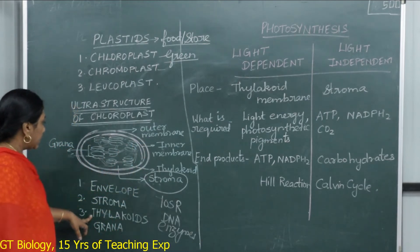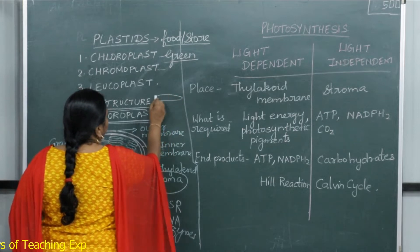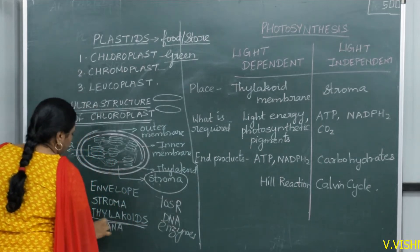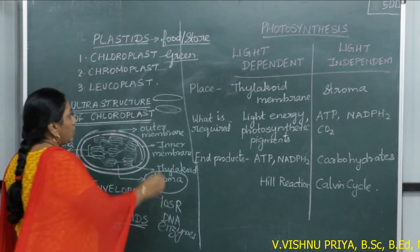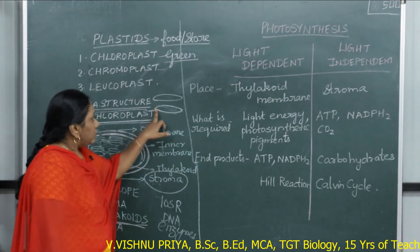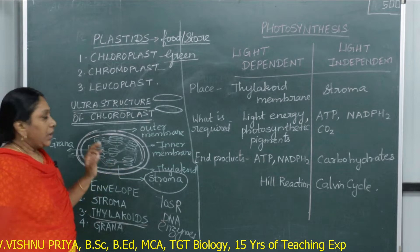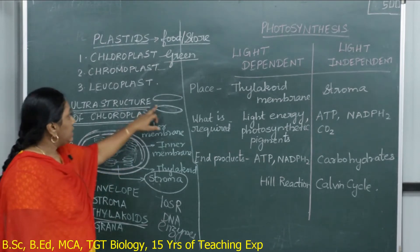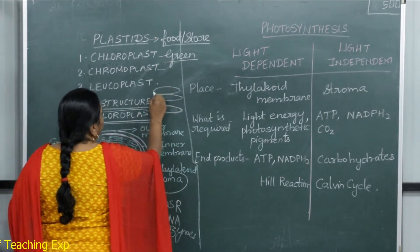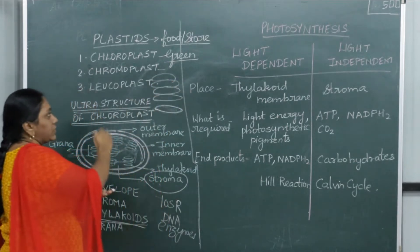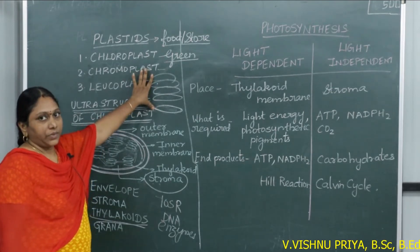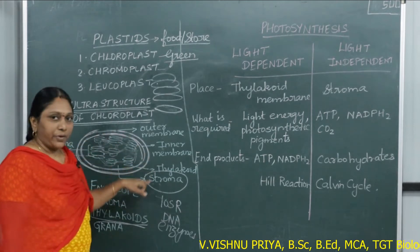The third component is thylakoids — disc-shaped structures present in the stroma. Each individual disc is called a thylakoid, and the space inside a thylakoid is called the thylakoid lumen. Chlorophyll is present in the thylakoid membrane. When these thylakoids are stacked one upon the other — like a stack of coins — this complete structure is called grana. The singular form is granum.